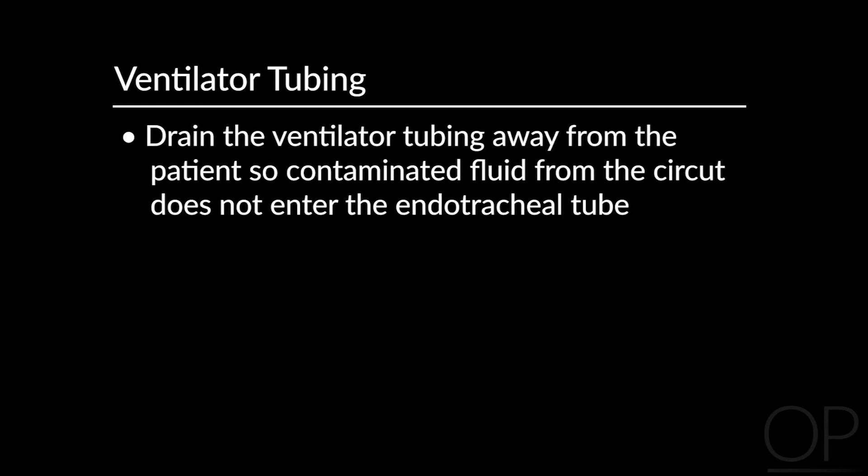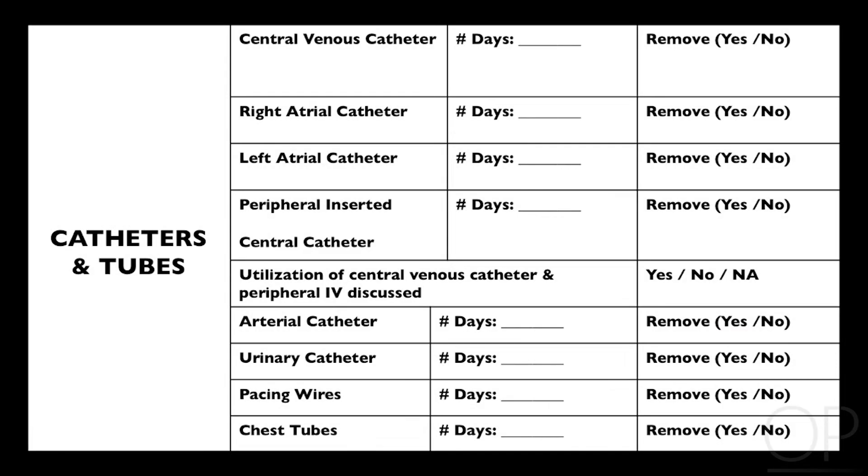It is also important to drain the ventilator tubing away from the patient so that contaminated fluid from the circuit does not enter the endotracheal tube. We identify a respiratory plan at patient rounds using a daily goals sheet. When patients are stable, sedation medications are decreased and paralytic medications are halted to assess the patient's stability and respiratory status. If a patient is able to maintain adequate ventilation and vital signs, sedation will be decreased or stopped. It is important that the bedside nurse be part of these discussions.